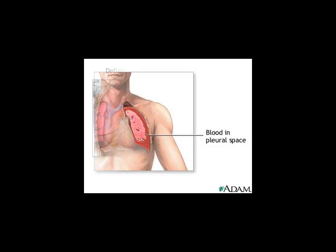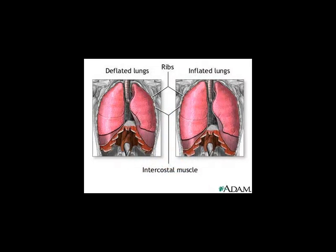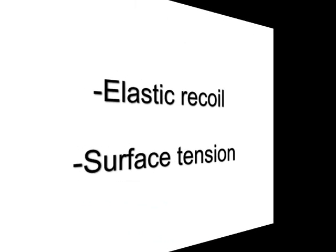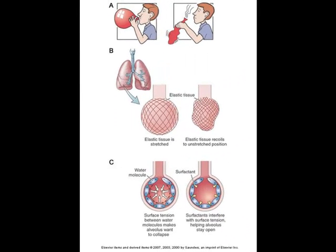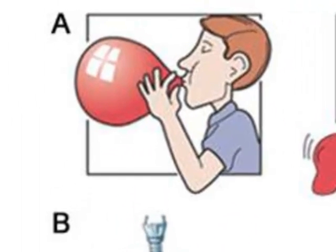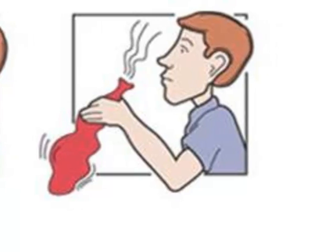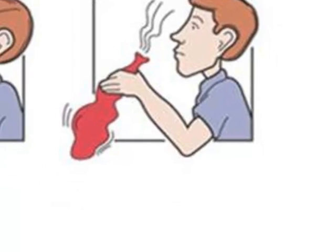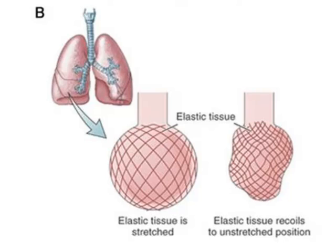Let's talk about lungs expanding and collapsing. Lungs can expand and collapse because of two basic principles: elastic recoil and surface tension. Elastic recoil basically refers to the stretchiness of the lung tissue. When you blow air into a balloon, the fibers in the balloon stretch, and when the air is released, those fibers will recoil. The same thing happens with the lungs — if we put air into the lungs, they will stretch, and when the air is allowed to escape, the fibers will recoil.